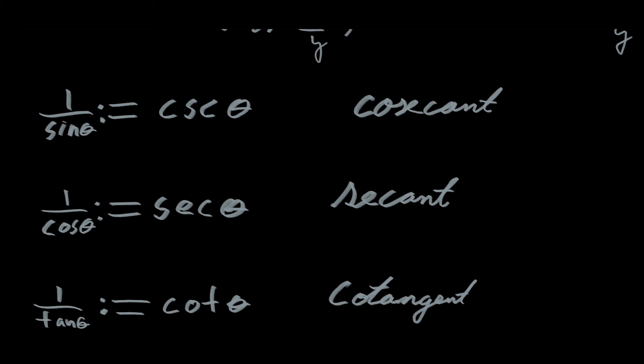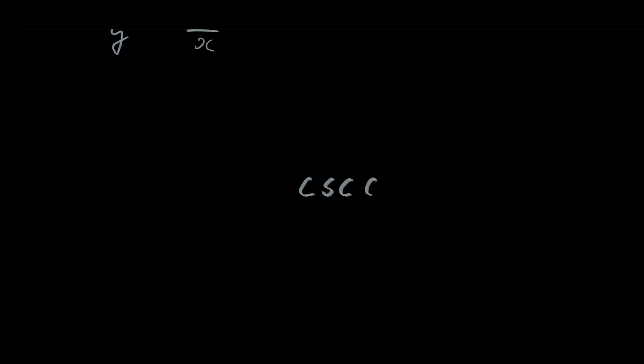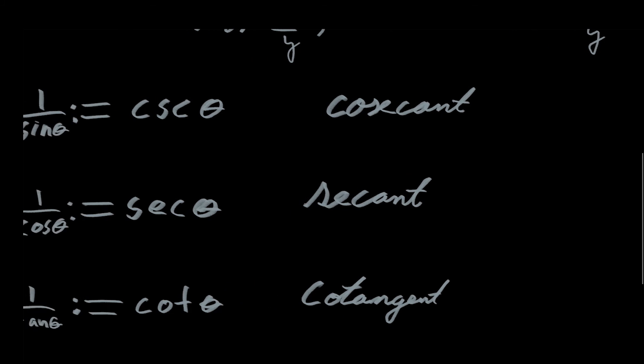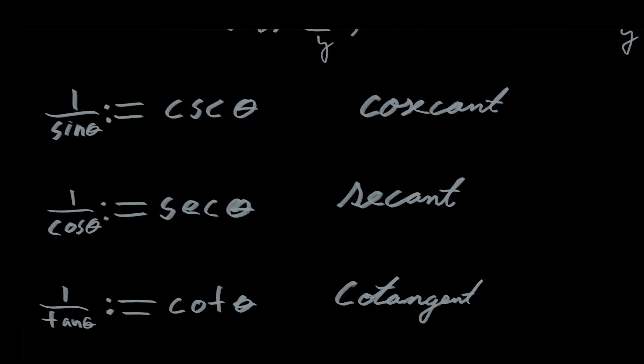Now it can get a bit tricky to remember which ones are which. Maybe you see CSC of theta and you're like, which one is that — is that 1 over sine or 1 over cos? It doesn't have a t in it, so it's obviously not the reciprocal of tan of theta, it's not cotan of theta. But it can be difficult to remember which one is which. So here is just a handy mnemonic device. Imagine each of them written out in full.